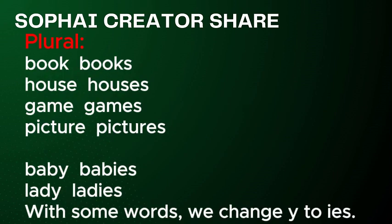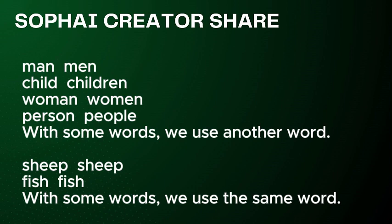Plural forms: book → books, house → houses, game → games, picture → pictures. Baby → babies, lady → ladies — with some words we change Y to IES. Man → men, child → children, woman → women, person → people — with some words we use another word. Sheep → sheep, fish → fish — with some words we use the same word.